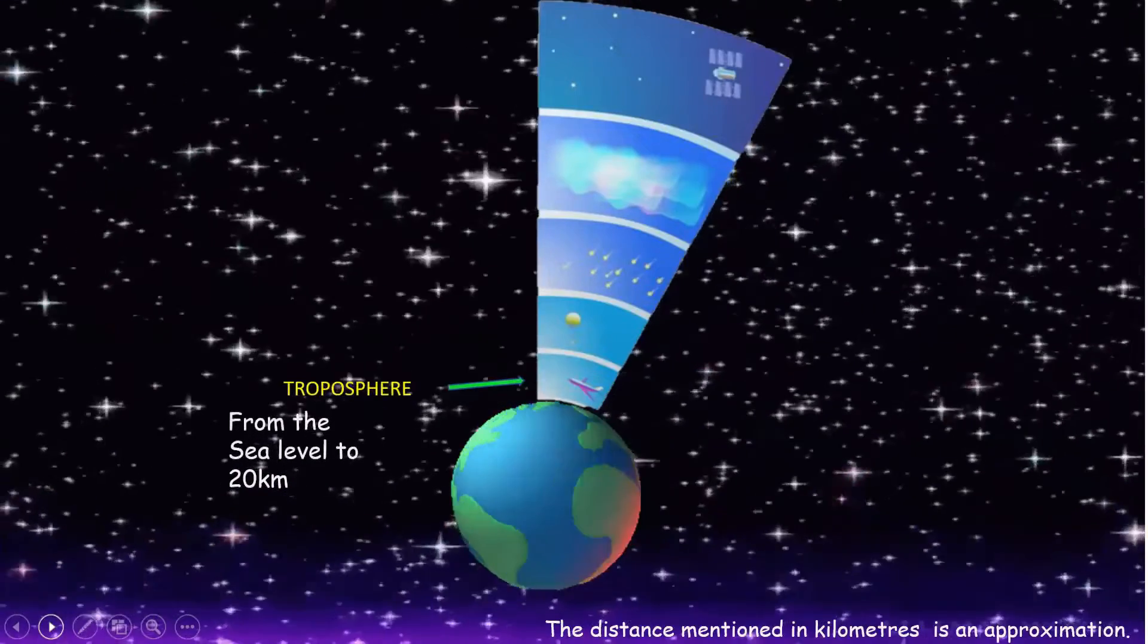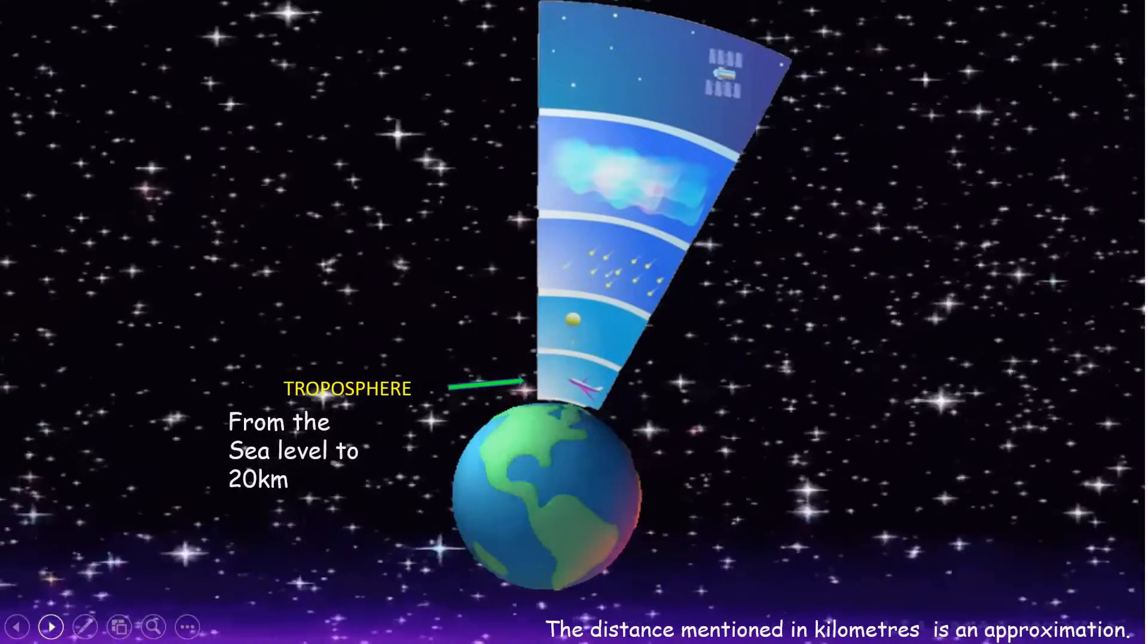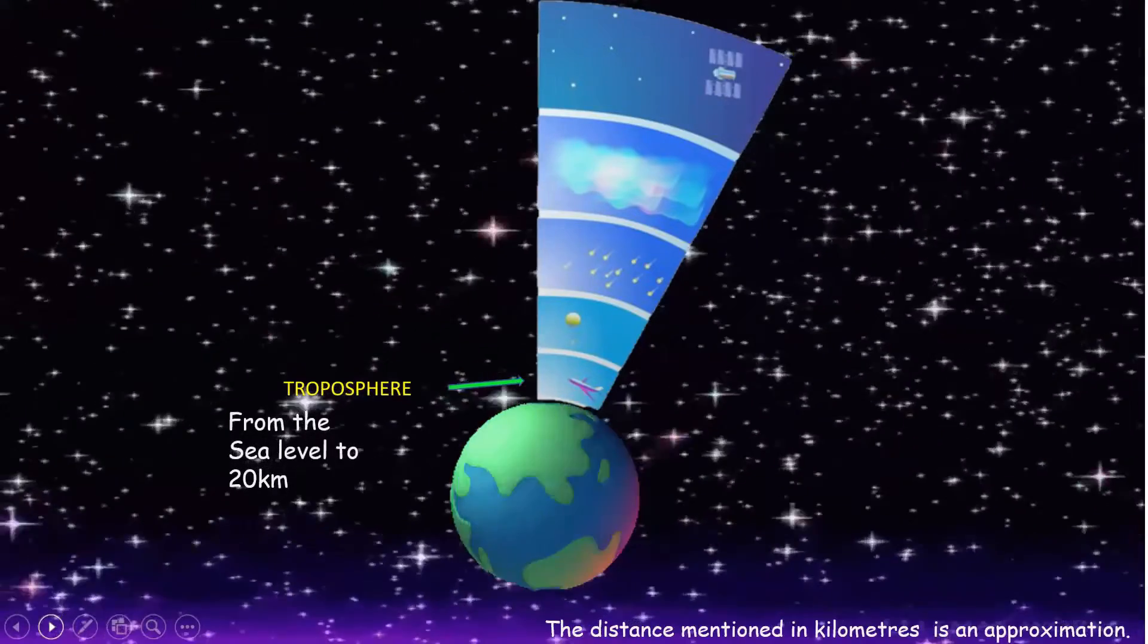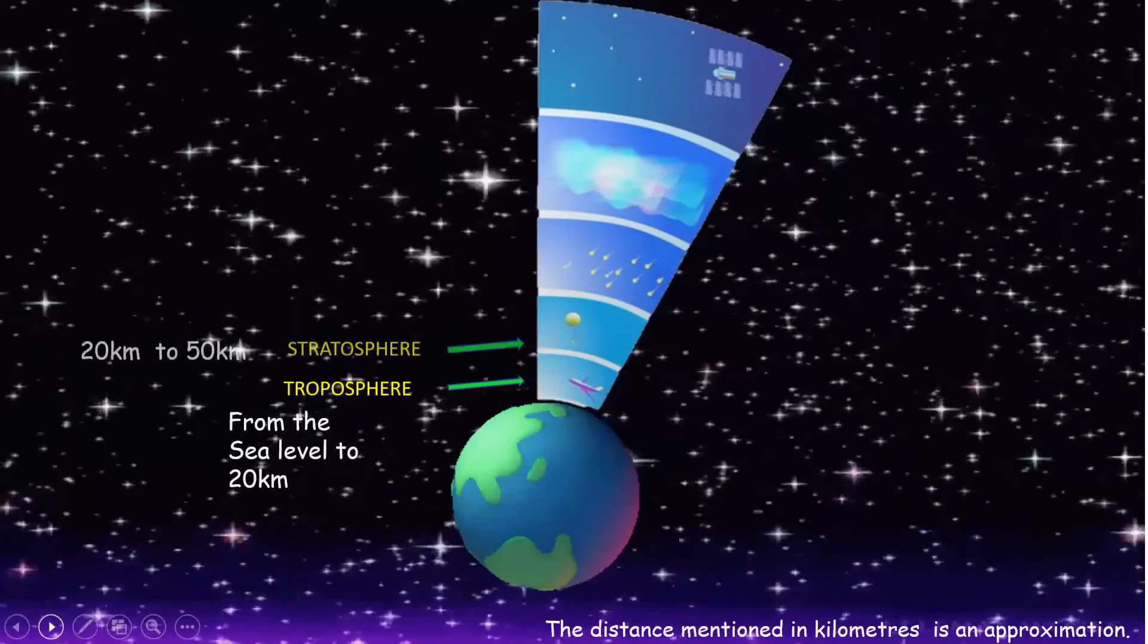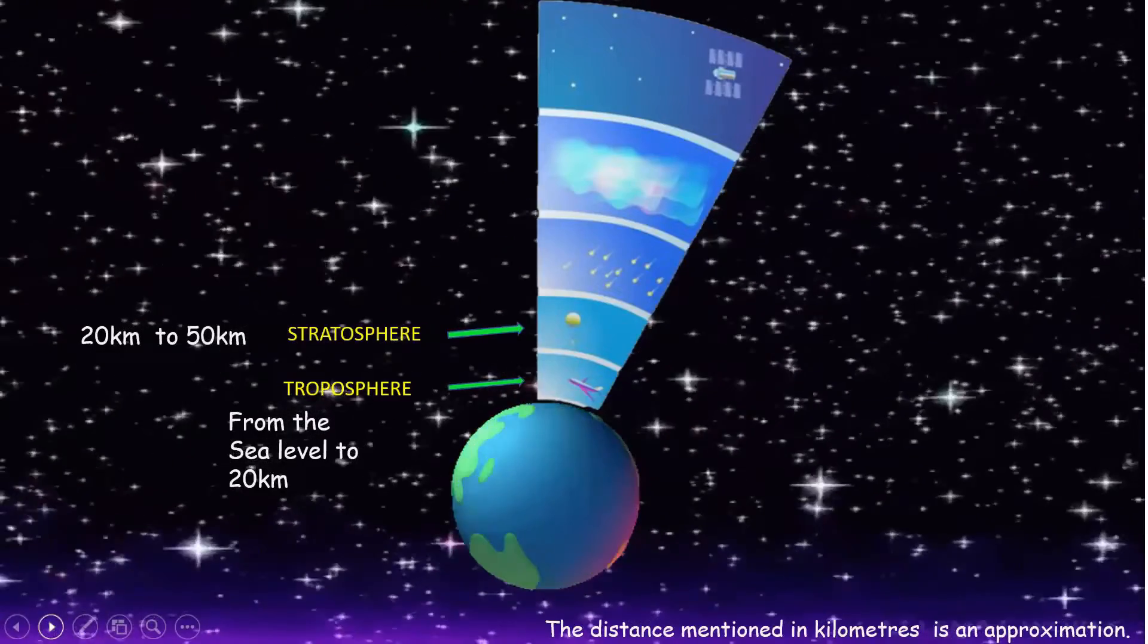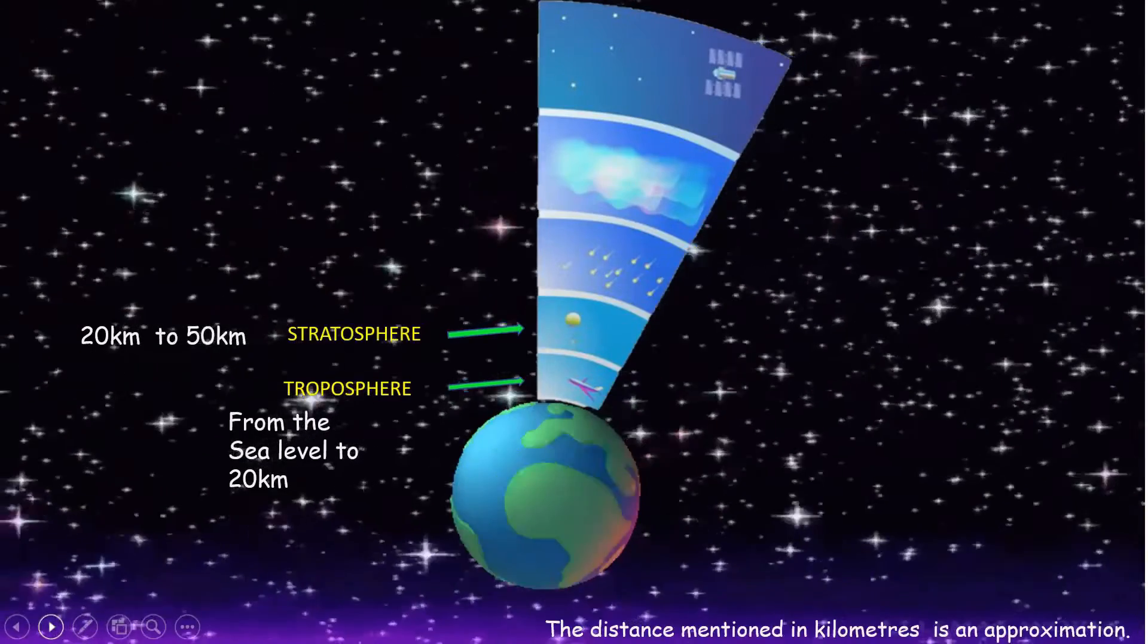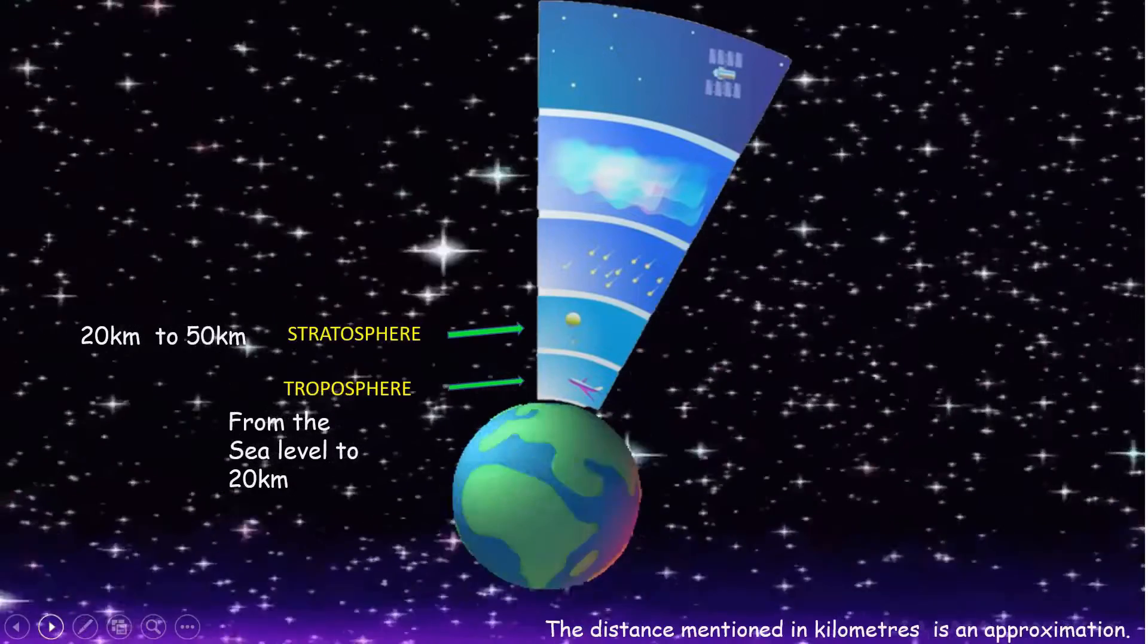Our atmosphere is divided into certain layers. The first layer extends from the sea level up to 20 kilometers and is called the troposphere. The second layer which extends from 20 kilometers up to 50 kilometers up in the space is called the stratosphere.